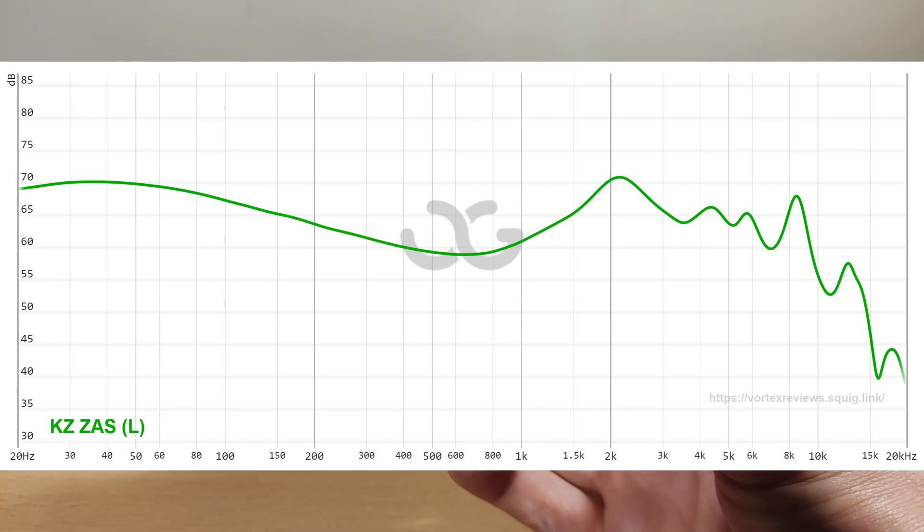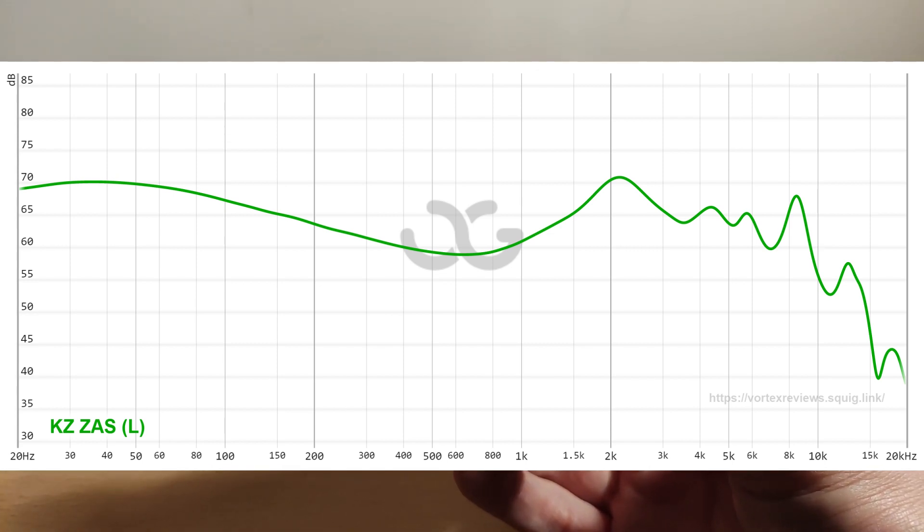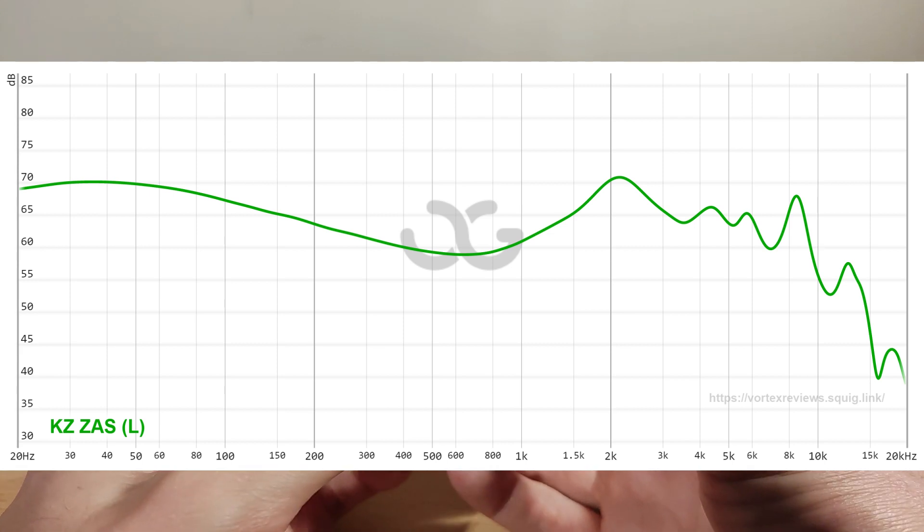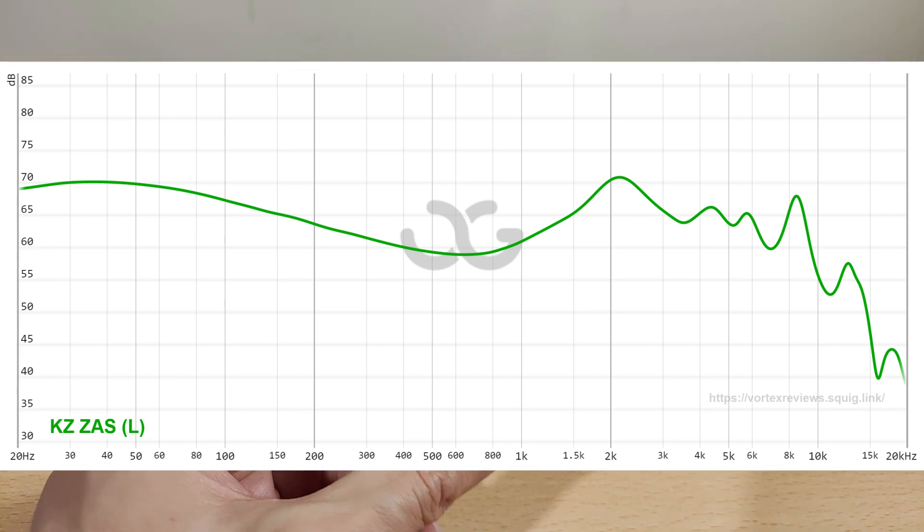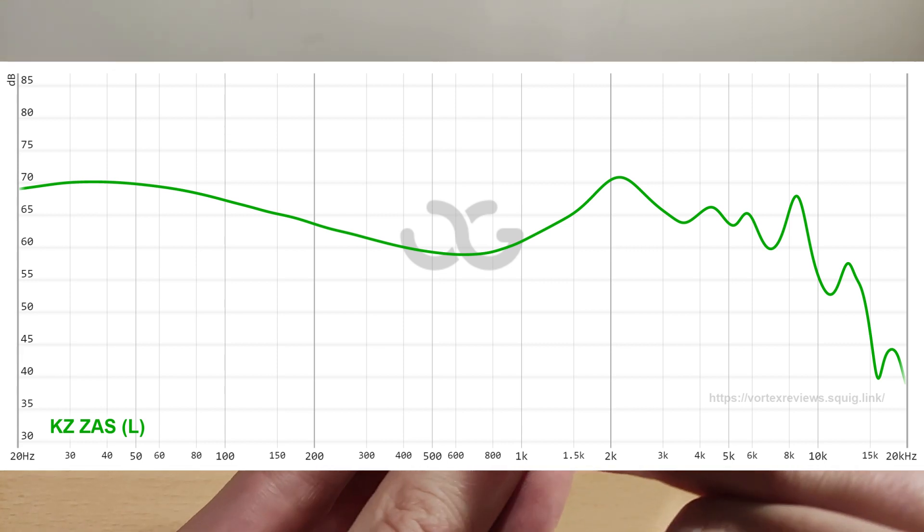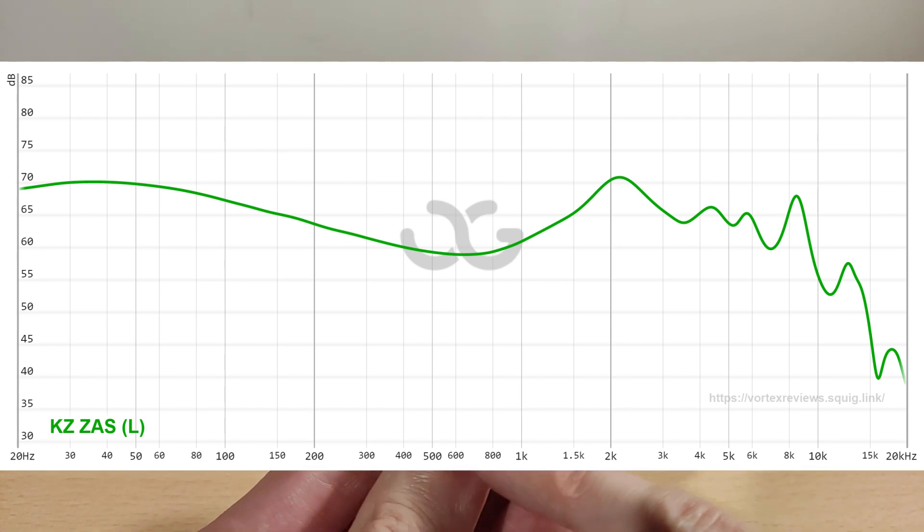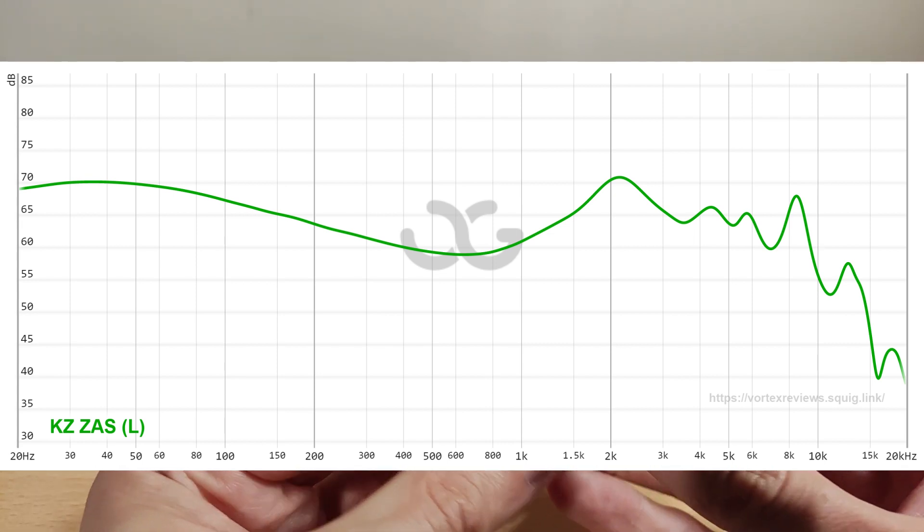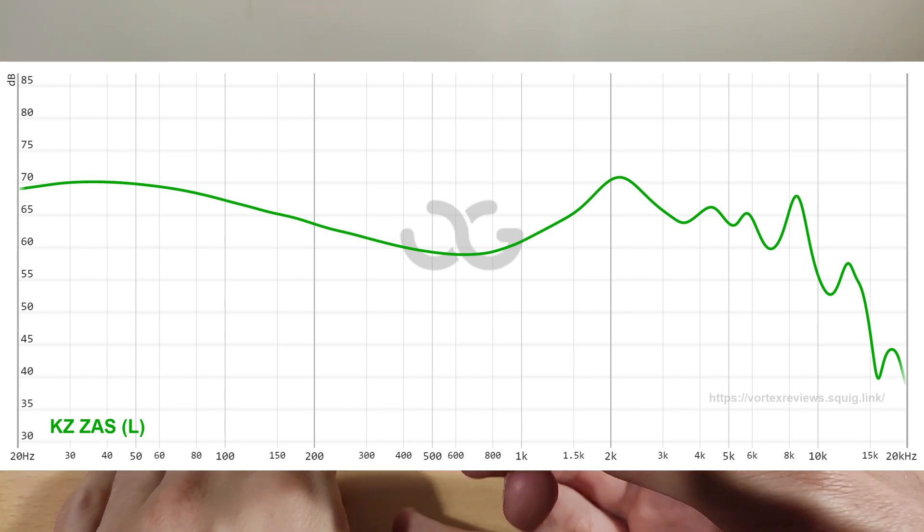And yeah, compared to like the ZAX, that had these in mids as well, but I might do this, I'm going to do a separate video just between those two because they're both seven BA, one DD per side, they're both the similar price. I think the ZAX has a BA in the nozzle which is normally worse. This has all armatures, all in the shell as far as I'm aware, and they all go around the dynamic, which thing in this case is not the best because the DD is too prominent.